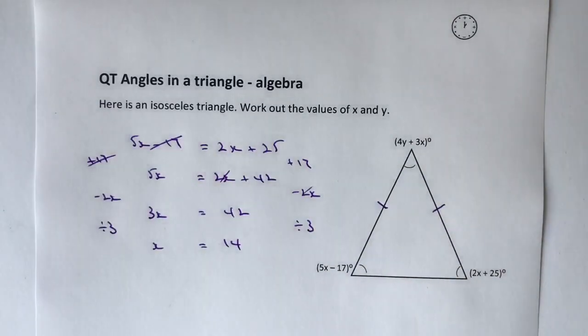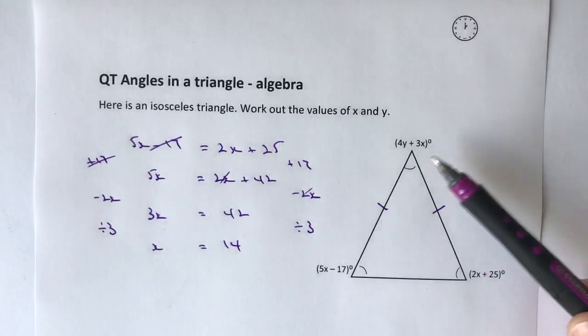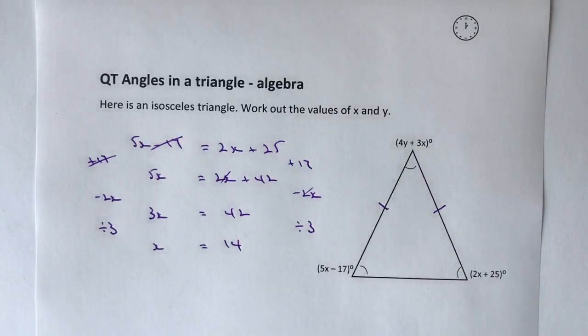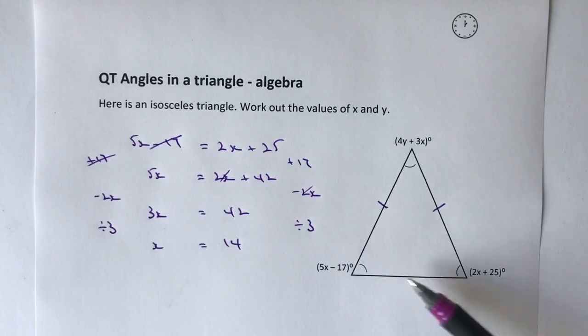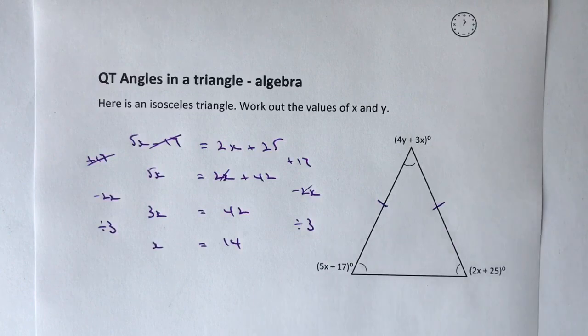So I've worked out the value of x already, just by recognizing that because it's an isosceles triangle the two base angles are the same. In order to work out the top angle, we need to know the value of y. Because it's isosceles, if I work out the value of each base angle, add them together, and take them away from 180, I should be able to find the value of y.